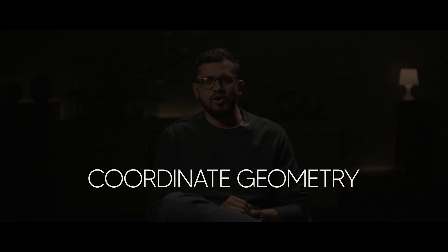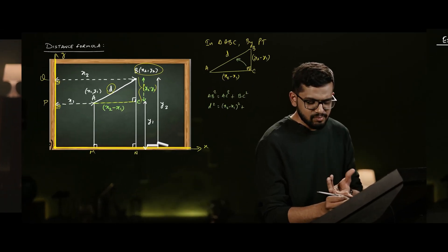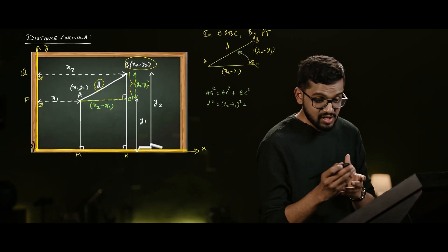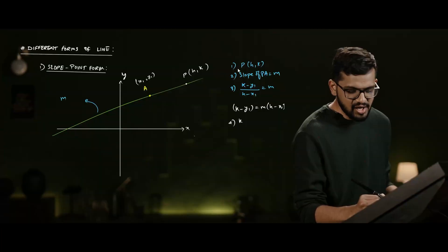The answers to all these questions lie in this course — coordinate geometry. Coordinate geometry mainly comprises five parts: straight lines, circles, parabola, ellipse, and hyperbola. But in this course, we'll mainly focus on straight lines and the basics of coordinate geometry. This course will teach us to find the distance between two points and write the equation of a line.